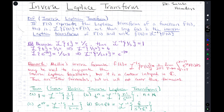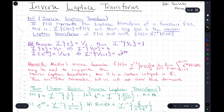Let's look at some examples. We know the Laplace transform of 1 is 1/s, so the inverse Laplace transform of 1/s is 1. Likewise, the Laplace transform of t is 1/s², so the inverse Laplace transform of 1/s² is t. And from the known Laplace transform formula, the inverse Laplace transform of 1/(s+3) is e^(−3t).